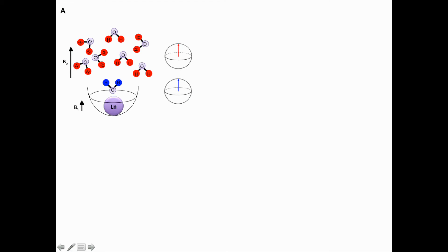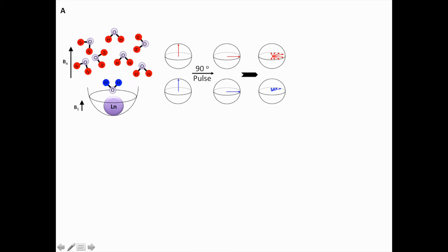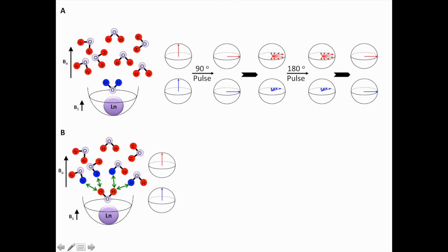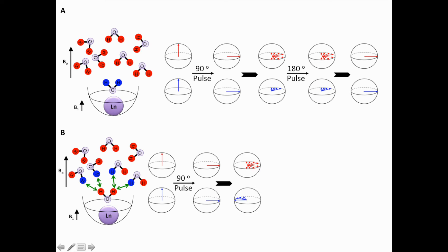To measure T2 relaxation, a 90-degree pulse is applied to flip magnetization into the XY plane, where all the magnetization vectors start defocusing. Applying a 180-degree pulse causes refocusing of all those individual magnetization vectors to yield a net magnetization. The presence of a water molecule in close proximity to the lanthanide metal in the contrast agent causes the protons of that water molecule to resonate in a different phase compared to bulk water protons.